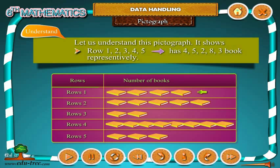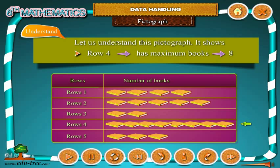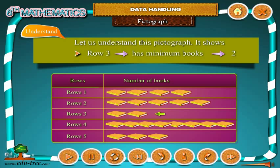The rows have 4, 5, 2, 8, and 3 books respectively. Row 4 has the maximum books — 8. Row 3 has the minimum books — 2.